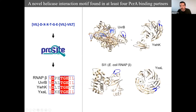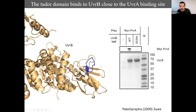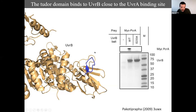Searching for this motif in Bacillus subtilis proteins using ProSite, we found seven proteins — four of which have already been shown to interact with PcrA. The RNA polymerase beta subunit, UvrB, and YwhK and YxaL all share exactly this same motif forming the same fold. So UvrD interacts with both RNA polymerase and UvrB using the same interaction motif, and in UvrB this motif is immediately adjacent to the surface that interacts with UvrA.